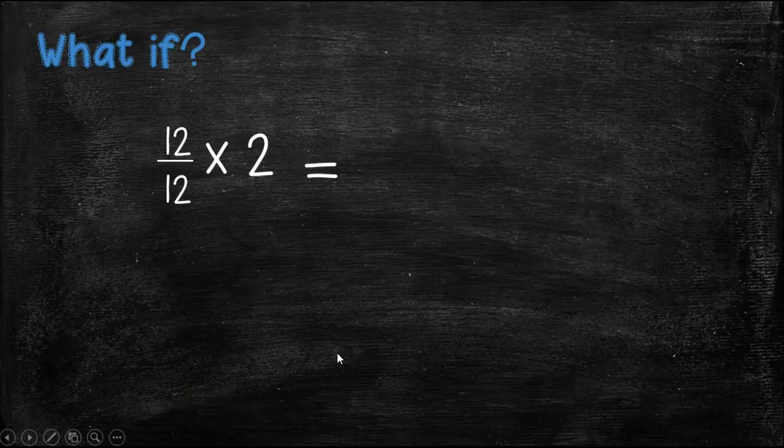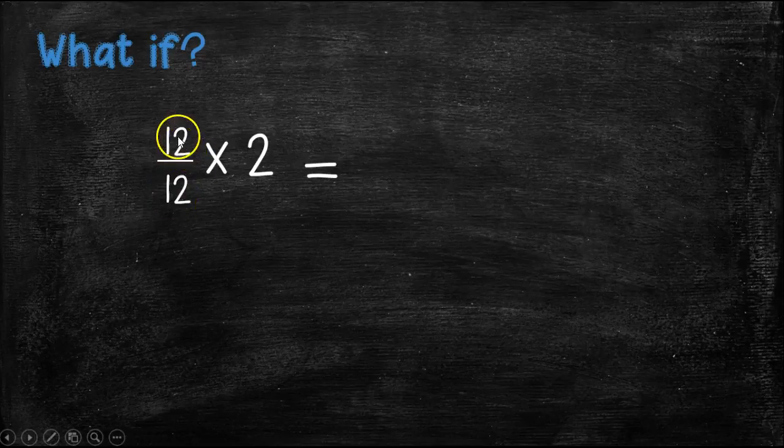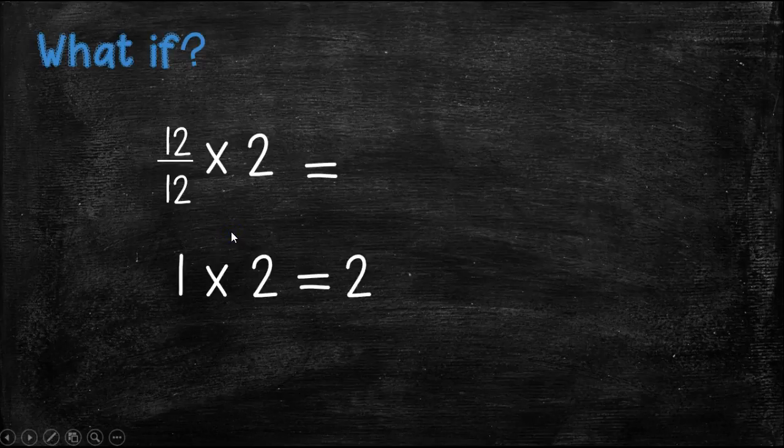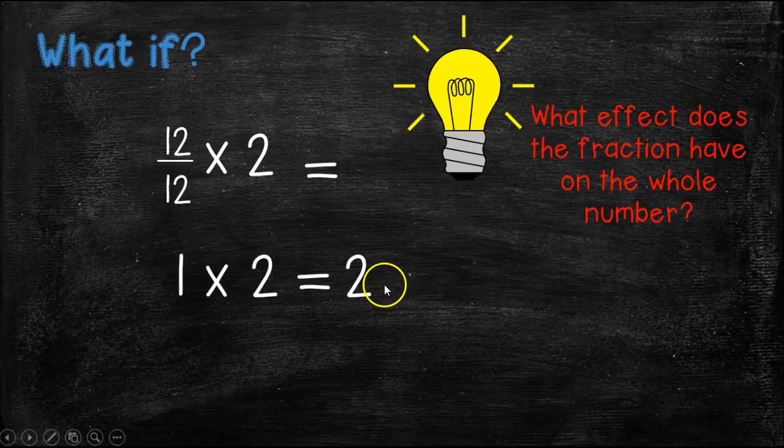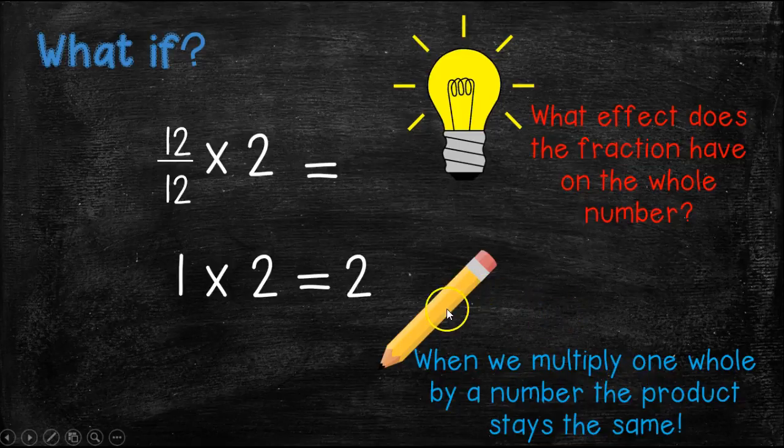So, what if, this one might throw you for a loop, we're going to multiply 12/12 times 2. So, 12/12 is also known as one whole, right? Because if a pizza had 12 slices in it and we wanted to eat the whole thing, we would eat all 12 slices. So, 12/12 is one whole. So, we're going to change 12/12 into 1 times 2, and we know that equals 2. So, when you are multiplying by a whole number or one whole, a fraction that is one whole, you are going to end up getting the same exact product, right? So, when we multiply one whole by a number, the product stays the same. Go ahead and pause the video and write that down.